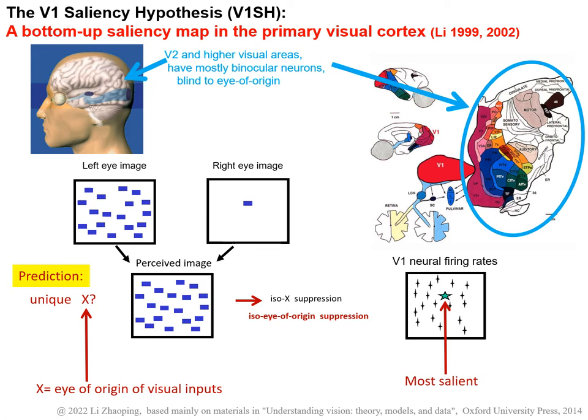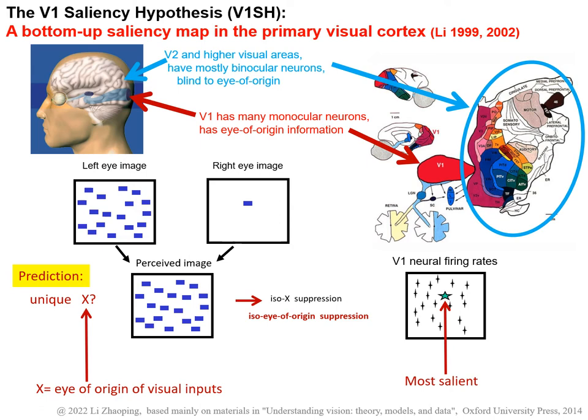This is likely why perceptually this bar is not distinctive. However, in V1 many neurons are monocular, tuned to the eye of origin of visual inputs. Therefore, saliency by uniqueness in eye of origin is a hallmark of the saliency map in V1.